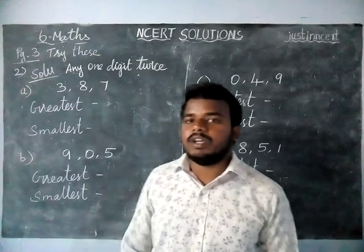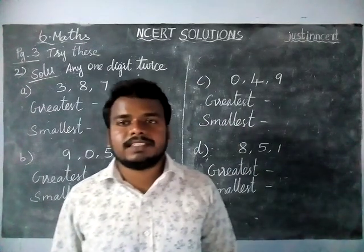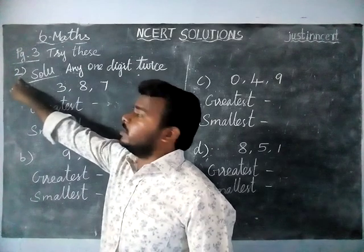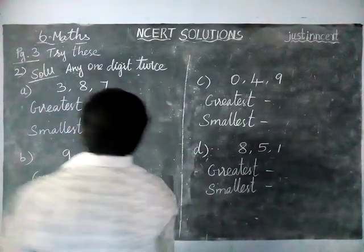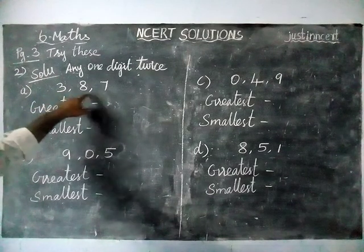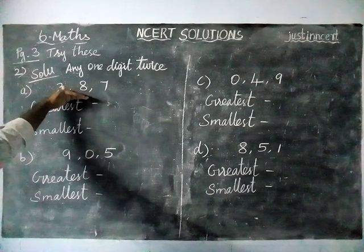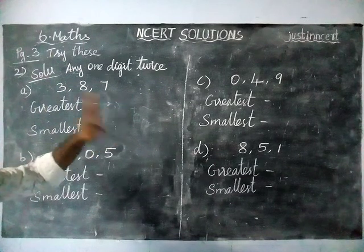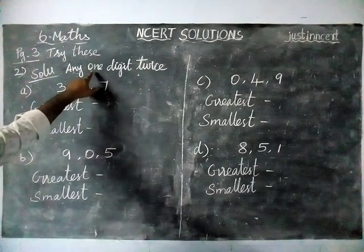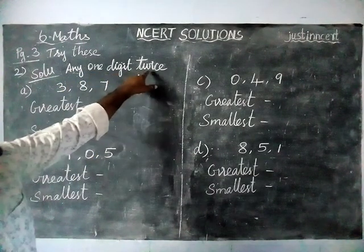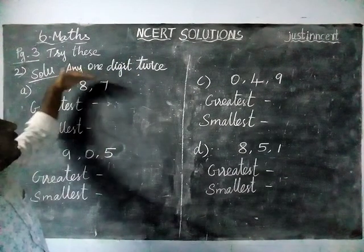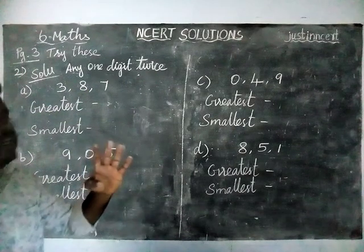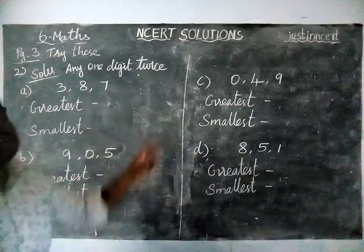Today we are going to see 6th standard maths — Try These sums, page number 3, second question solution. In this question, they have given only 3 digits. By using these 3 digits, we have to make the greatest 4-digit number and the smallest 4-digit number. We have to use any 1 digit twice — that is the condition.